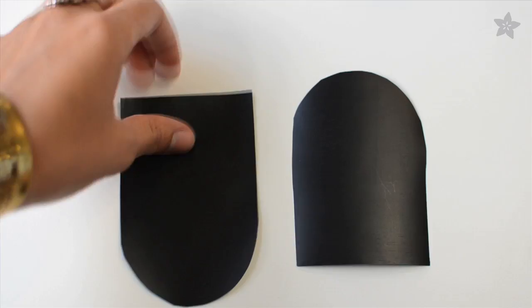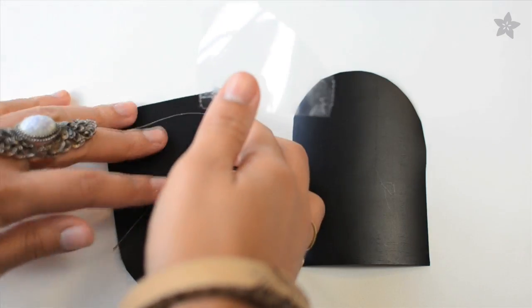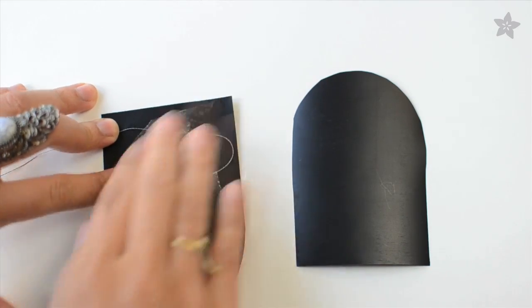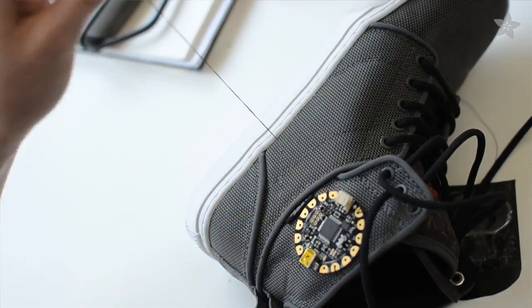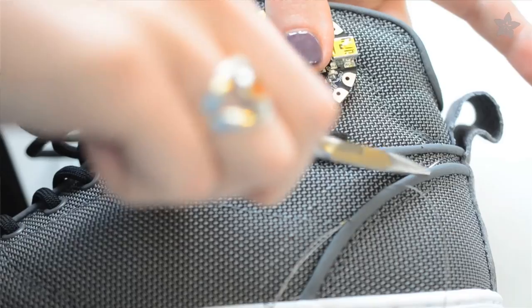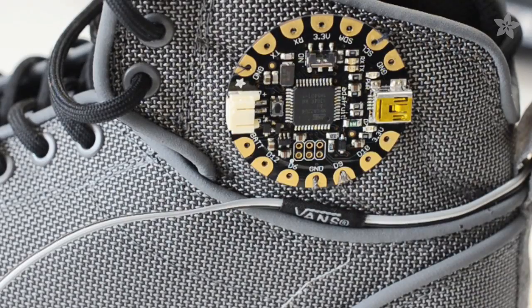Just tape one piece of conductive thread to each side of a small piece of Velostat, forming a loop under the tape. Then pick up the tails with a needle and stitch them up the side of the shoe, connecting one to ground and the other to an analog input on the Flora board.